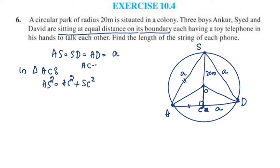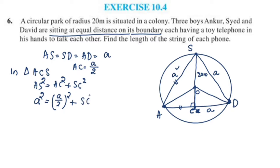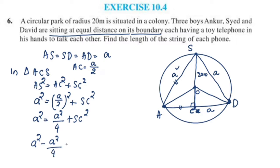AC is equal to AD by 2. AD is equal to A by 2. Now we will apply this to the Pythagorean theorem: A² equals (A/2)² plus SC². A²/4 plus SC² gives us A² minus A²/4 equals SC².